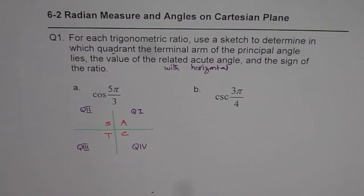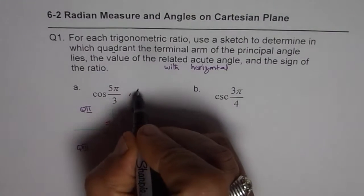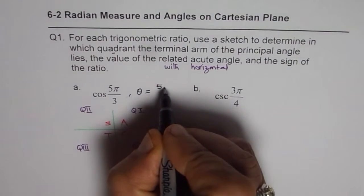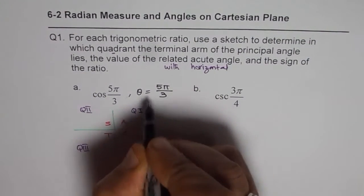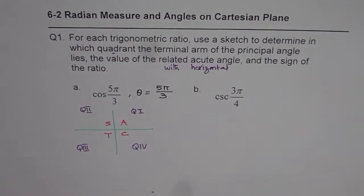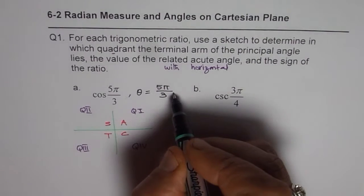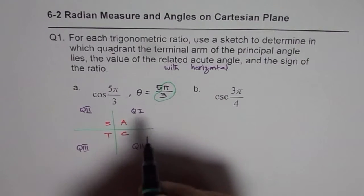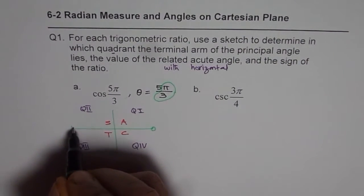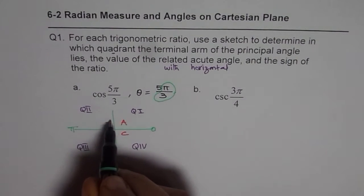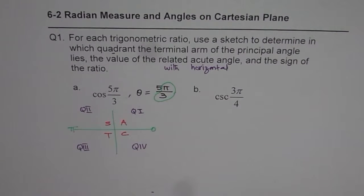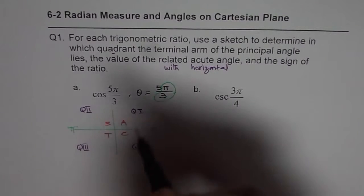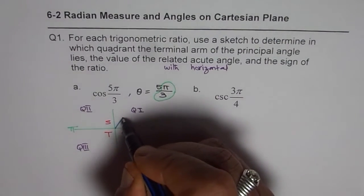Let's say the principal angle theta equals five pi over three. Now how do we find five pi by three? Five pi by three means you divide pi into three equal parts. This position is zero and this position is pi. We have to divide the top half into three equal parts — that is 60 degrees each.